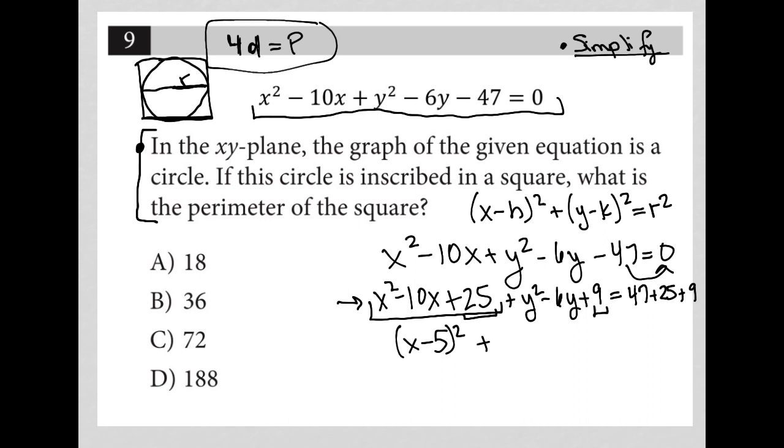We do the same thing with the y's. Y, if you recall, I go half of my negative 6, so minus 3, close it up and squared. You'll see that when you do the math there, it is in fact equal to y² - 6y + 9. That's the benefit of completing the square.